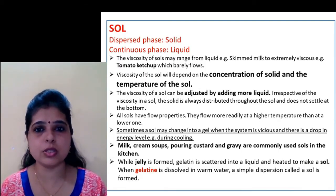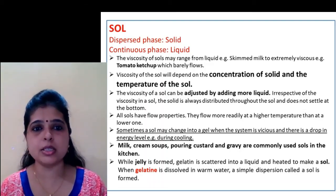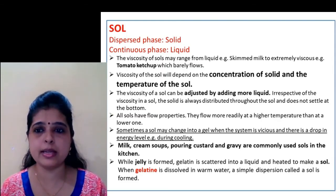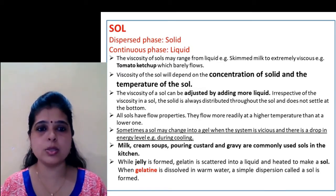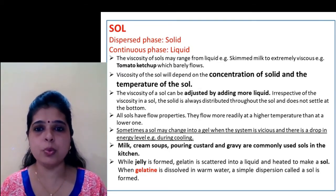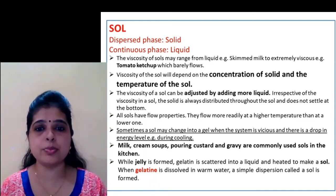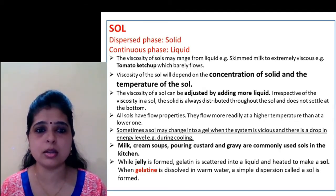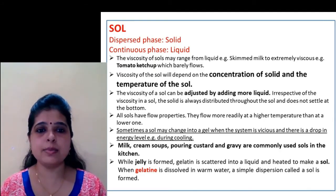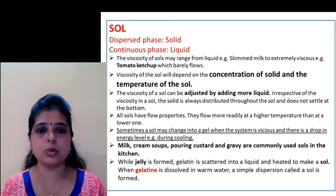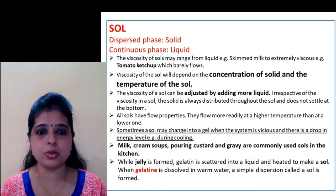If the concentration is greater, the viscosity is greater — that is directly proportional. The viscosity of a sol can be adjusted by adding more liquid. Sols have flowing properties; they flow more readily at higher temperature than at a lower one. Why at higher temperature? Kyonki viscosity kam ho jayega. Sometimes a sol may change into a gel when the system is viscous and there is a drop in energy level. But if you cool a sol, it can convert into a gel.